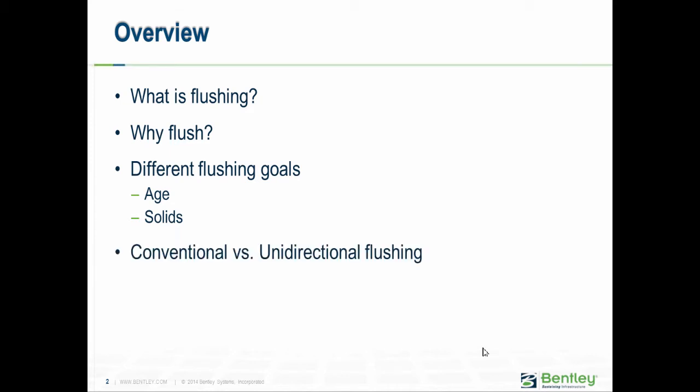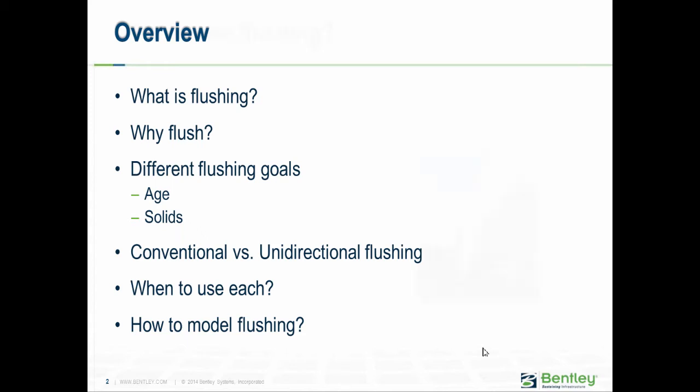We also have the idea of conventional flushing versus unidirectional flushing. Conventional flushing basically involves opening up hydrants in some logical order, while unidirectional flushing involves also closing valves to direct the flow to a very precise set of pipes. We'll talk about when to use each, because each one has its own benefits and difficulties, and how we should use modeling to help do a better job with flushing.